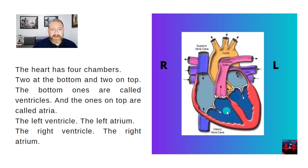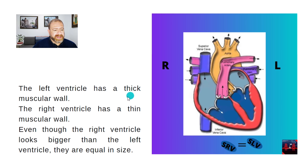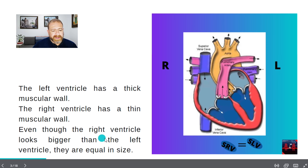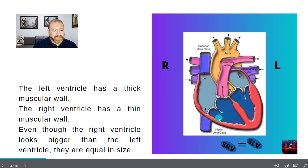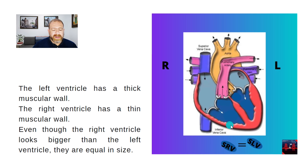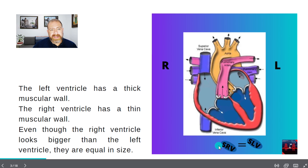The left ventricle has a thick muscular wall. The right ventricle has a thin muscular wall. Even though the right ventricle looks bigger than the left ventricle, they are equal in size.